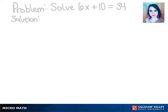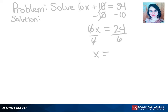The first step to solve this equation for x is to subtract 10 from both sides, so they cancel, and then we're left with 6x equals 24. Now we have to divide both sides by 6 so that we can get x alone, so then x equals 4, and that is our solution.